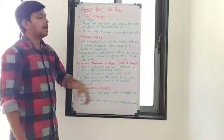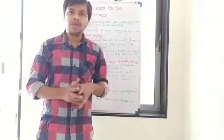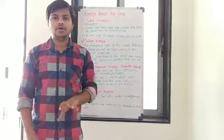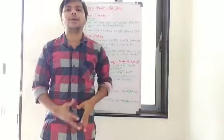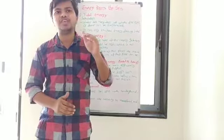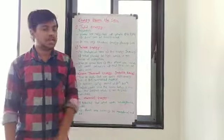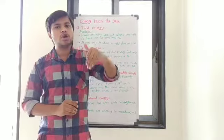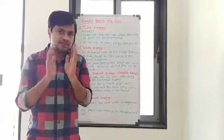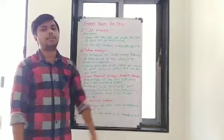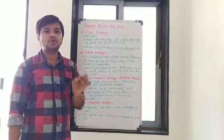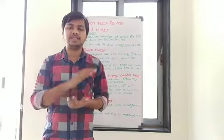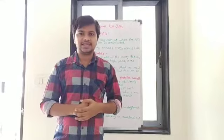The third type is ocean thermal energy. As the name suggests, here there is a temperature difference. The requirement is a temperature difference between the surface water and the water below the surface. The temperature difference should be at least 20 degrees Celsius between the surface water and the water 2 kilometers below. If this requirement is fulfilled, we can construct this type of plant. In this plant, we use a volatile liquid like ammonia, which easily vaporizes at a high temperature of around 30 to 35 degrees Celsius.